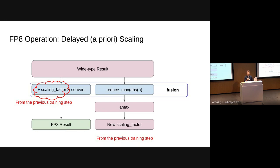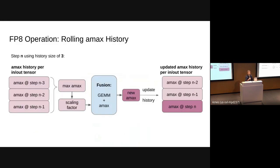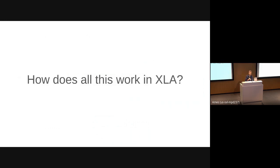In delayed scaling, to compensate for using an inexact prior scaling factor, we maintain not only the very last scaling factor but a ring buffer of scaling factors from the last N steps. We take the max of all of those to generate our scaling factor, and when the new amax comes out of the fusion operation we roll it into the ring buffer and do the bookkeeping.